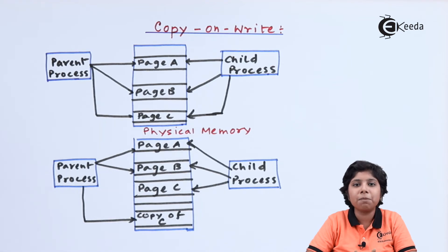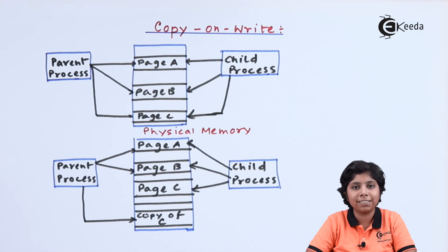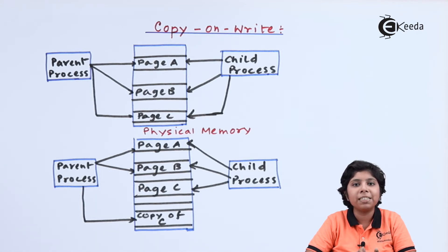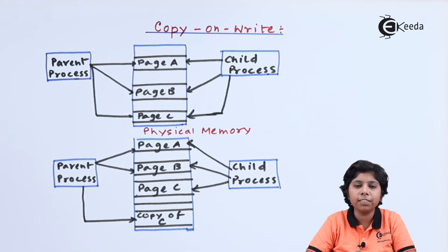The operating system must allocate pages using a zero-fill-on-demand system, meaning that a page to be allocated is first zeroed out — all previous contents are written out and freed — before it is allocated to other systems.